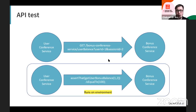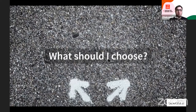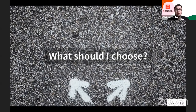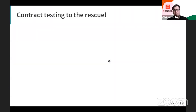So we have two choices: either a really fast test at the unit level, or a really slow test at the API level — but the API level provides more value because we're using real implementation. We need something in the middle, and that's where contract testing comes in.